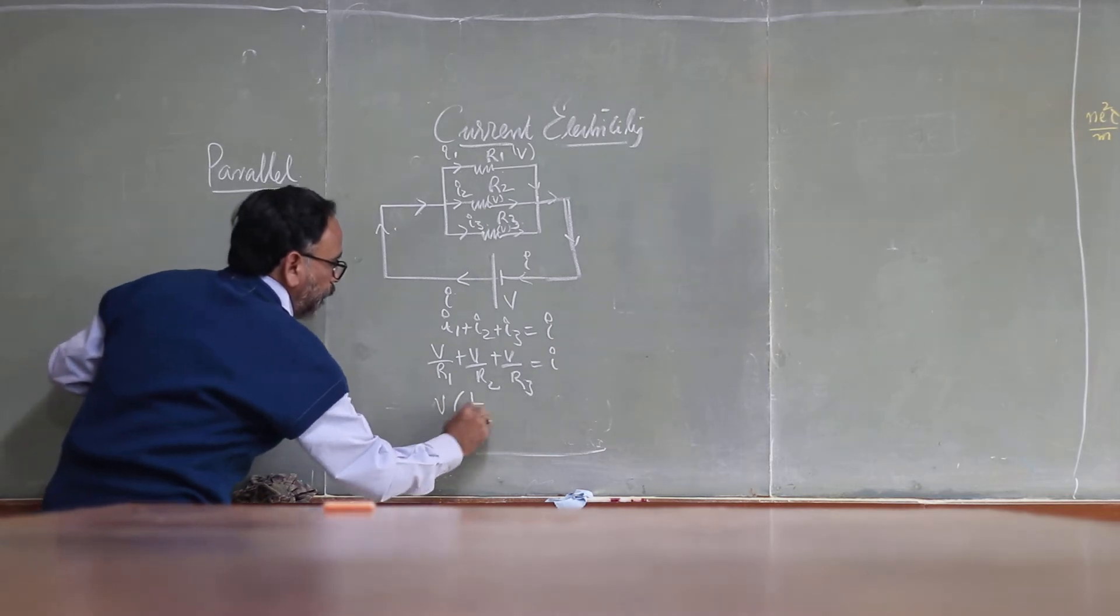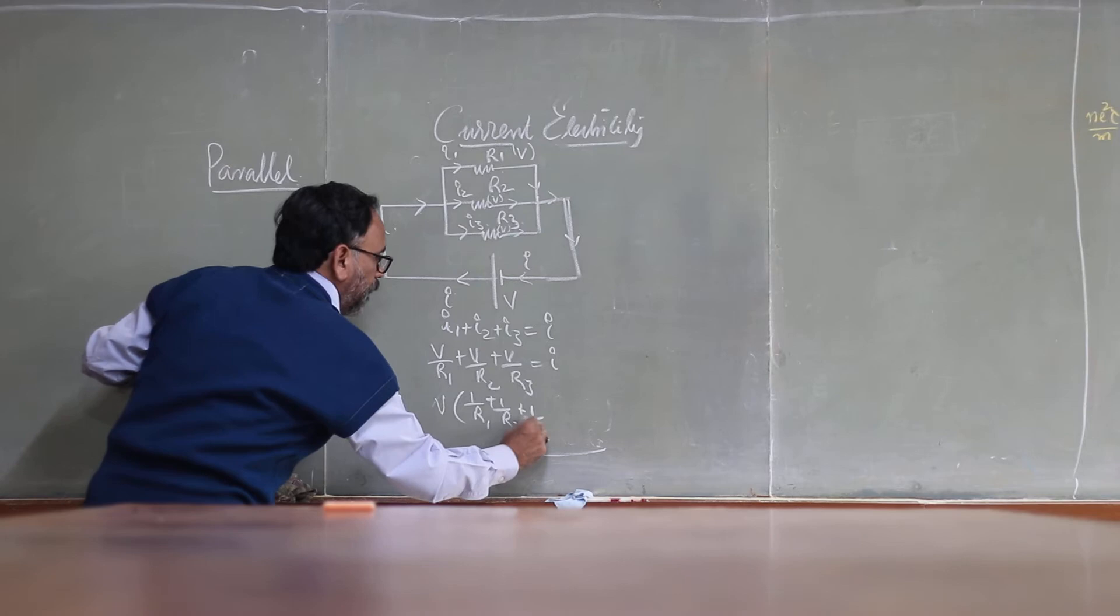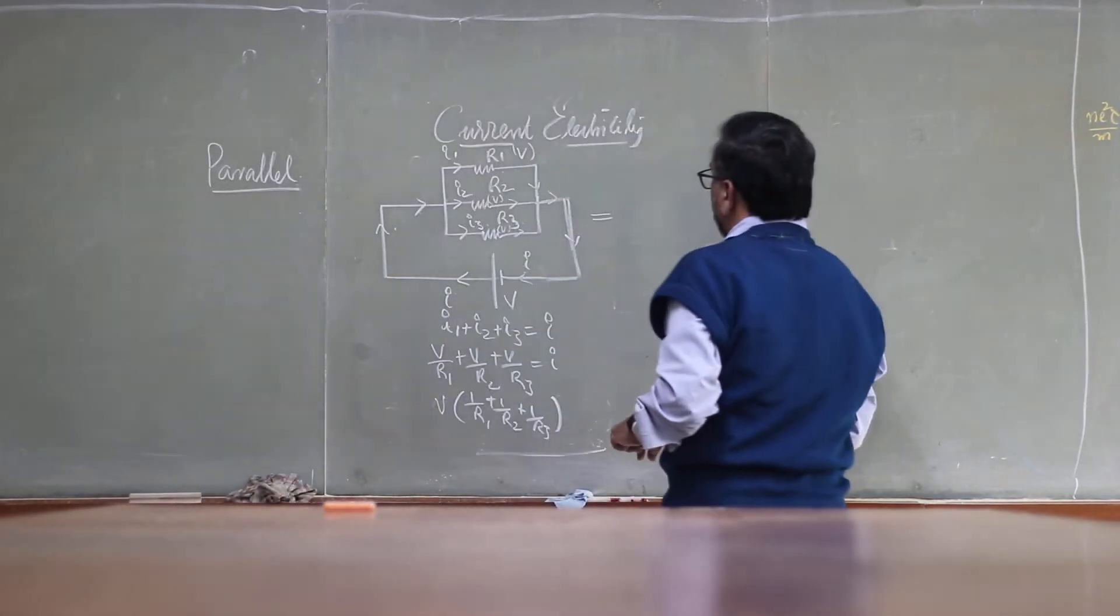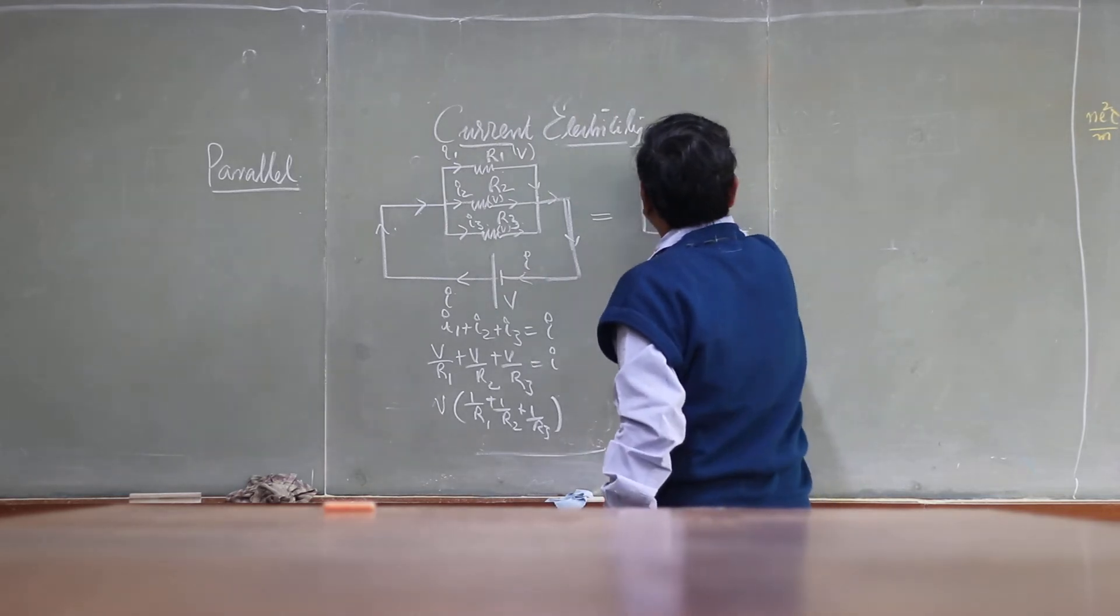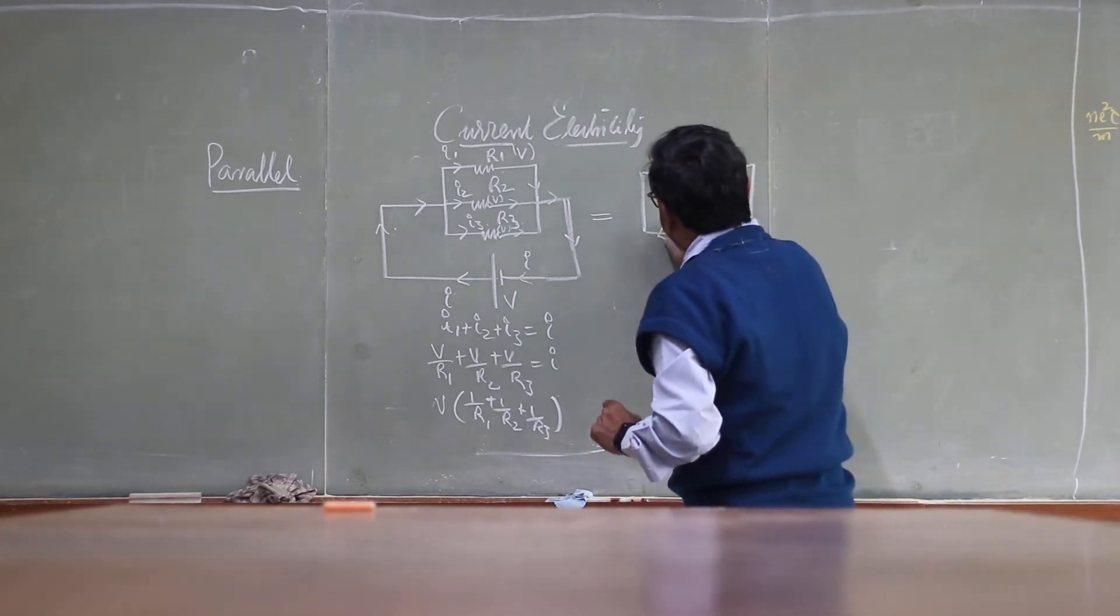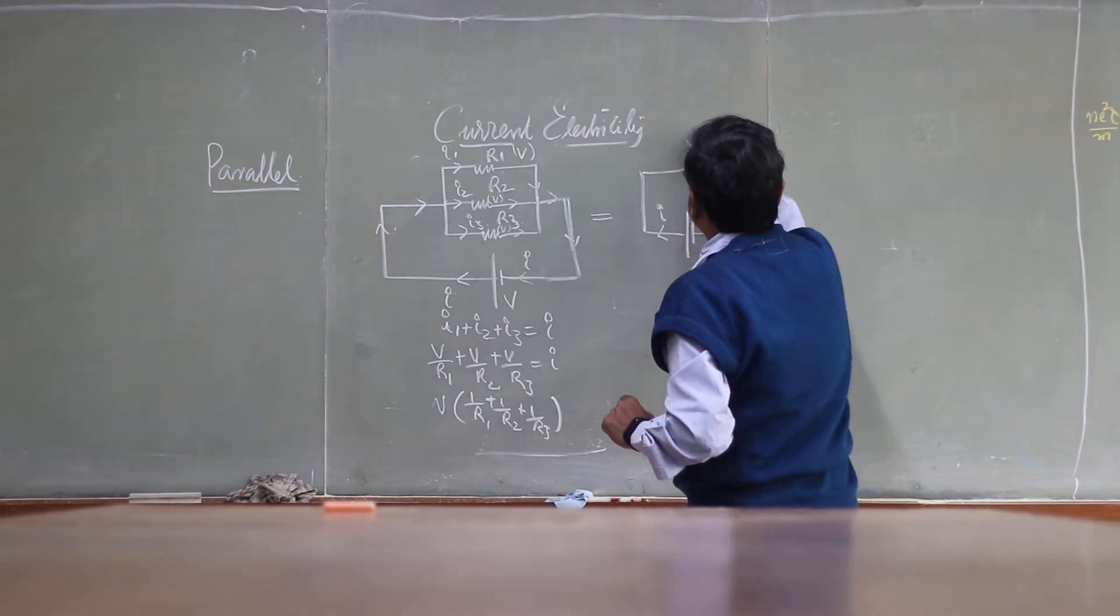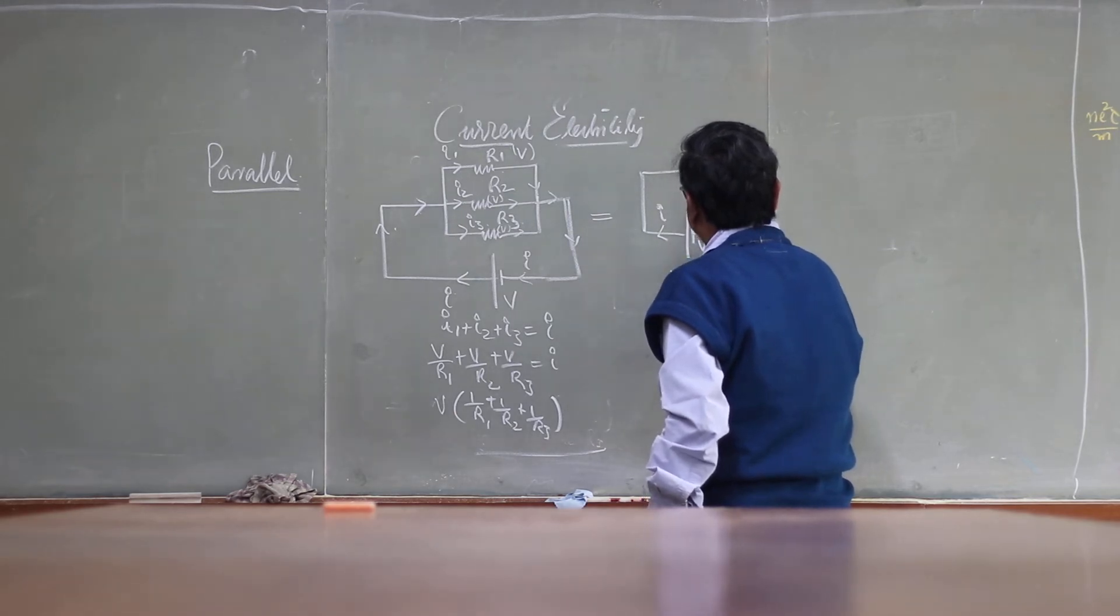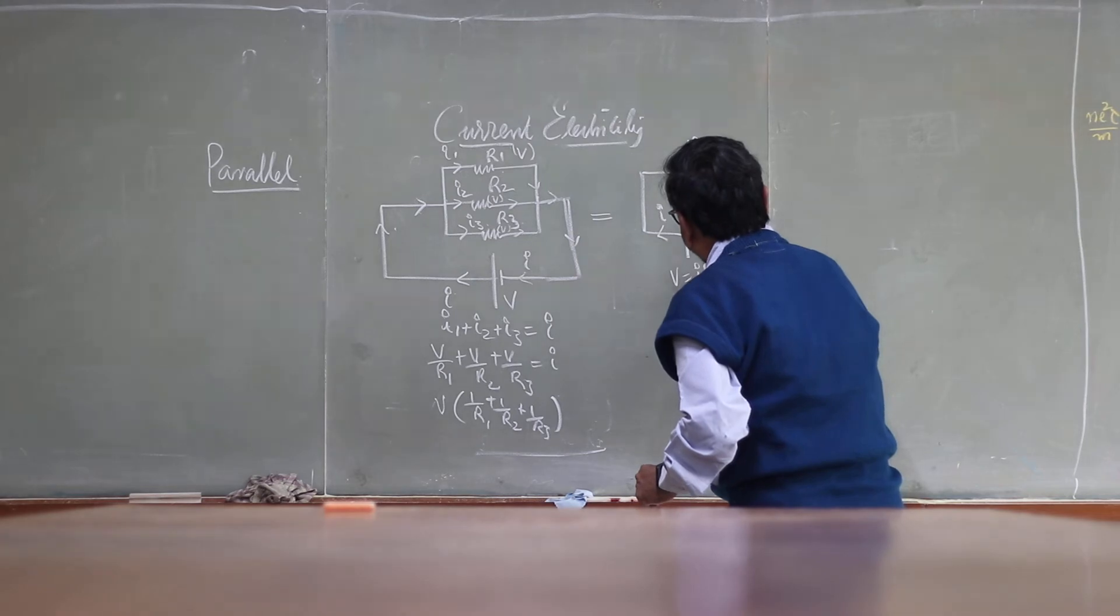Now if you take V as common: 1 by R1 plus 1 by R2 plus 1 by R3. Now if you replace this entire circuit in such a way that we are connecting the same cell and we are connecting a resistor, we have to choose a resistor in such a way it should also draw the current I from the cell. In that case, V is equal to I times R, so I is equal to V by R.